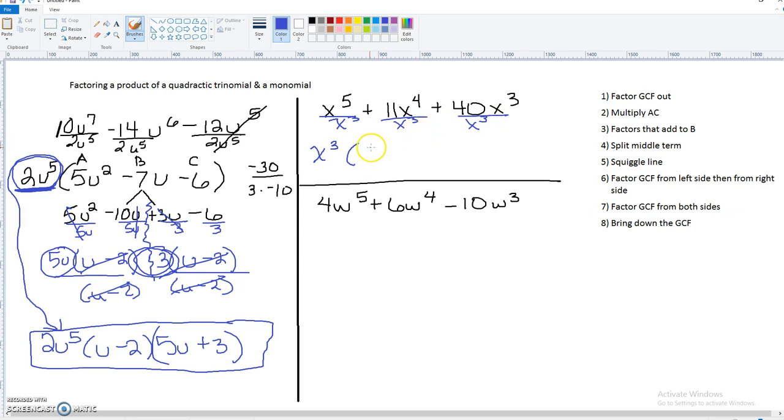x cubed. Okay, so that leaves us x squared plus 11x plus 40. Now, with this example, if you can, you would do the AC method. Okay? So we need factors of 40 that would get us 11.